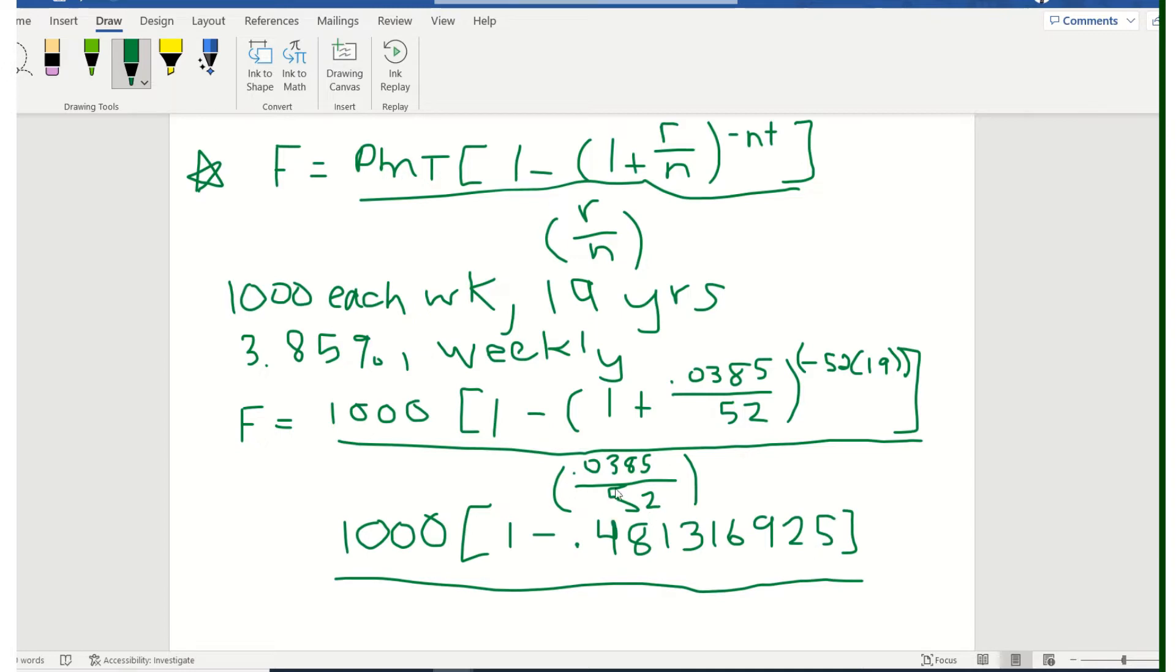Now I'll go ahead also while I'm at it and put this part in the bottom, 0.0385 divided by 52, into the calculator. Again, I won't round things at this point.